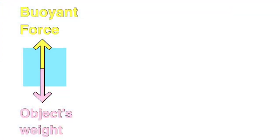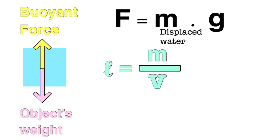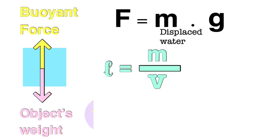Here the object enters water until forces act upon it. Archimedes found that F equals the mass of the displaced fluid times the gravitational field. There is another formula: F equals the density of the fluid times the volume of displaced fluid times the gravitational field.